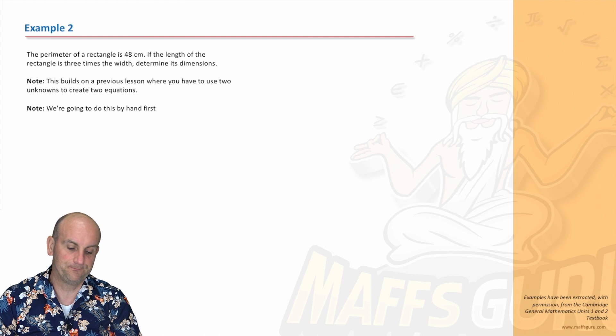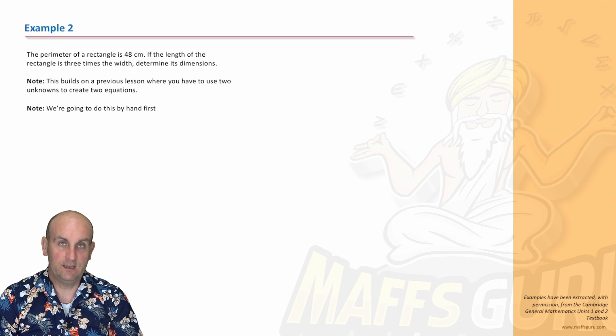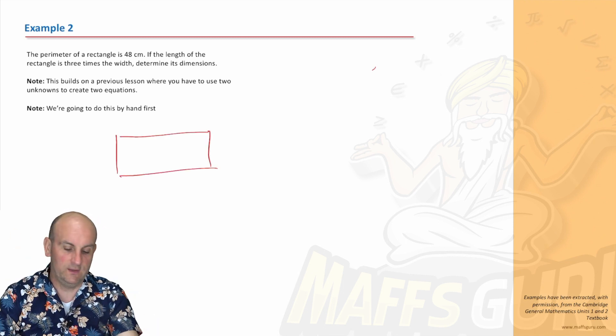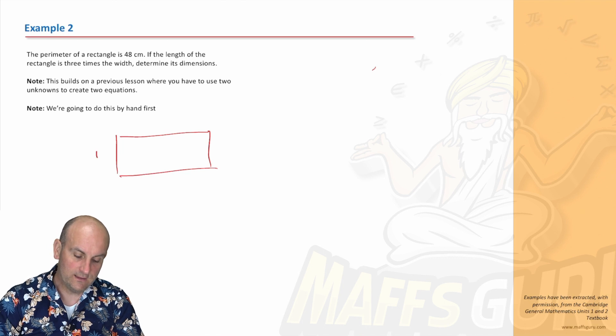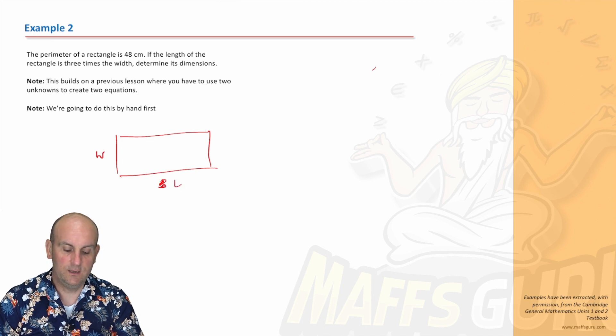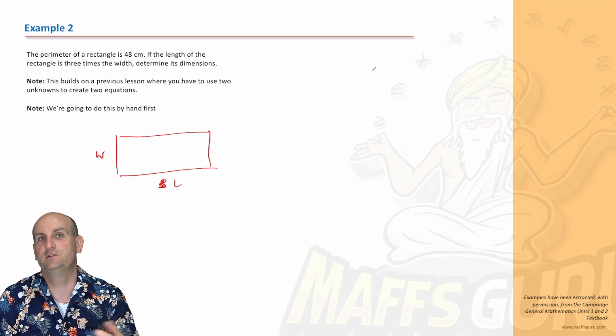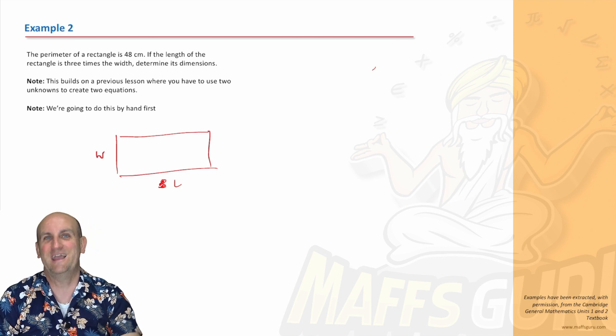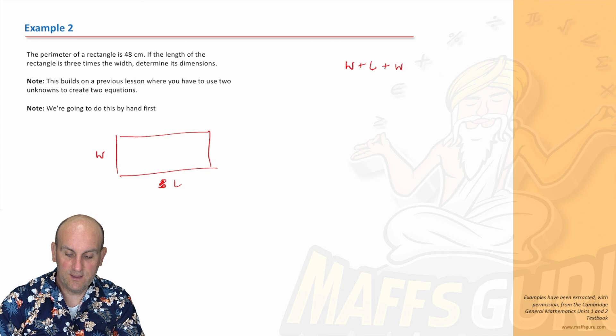Next one: the perimeter of a rectangle is 48 centimeters. I always like to draw a diagram first, so the perimeter is the distance all the way around the edge. If the length of the rectangle is three times the width, so let's call that W and we now know that that is L. Determine its dimensions. When it says determine the dimensions, you want to know the length and the width. This is actually a lot easier to do without simultaneous equations, but anyway.